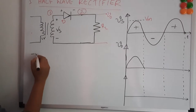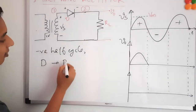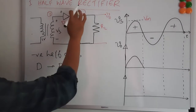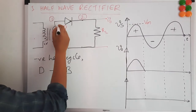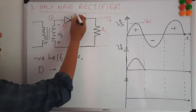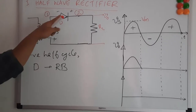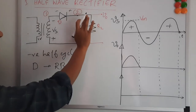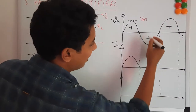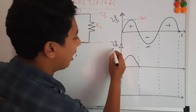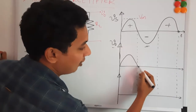During the negative half-cycle, your diode is reverse biased — the positive and negative terminals are reversed. Because of that, your diode is reverse biased, and there will be no current conduction. This is equivalent to an open circuit, so you will not have any output voltage during the negative half-cycle.